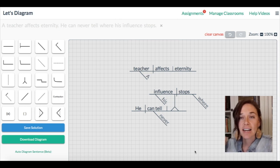So there you have it. That's a sentence diagram. Two sentence diagrams of a teacher affects eternity, he can never tell where his influence stops.